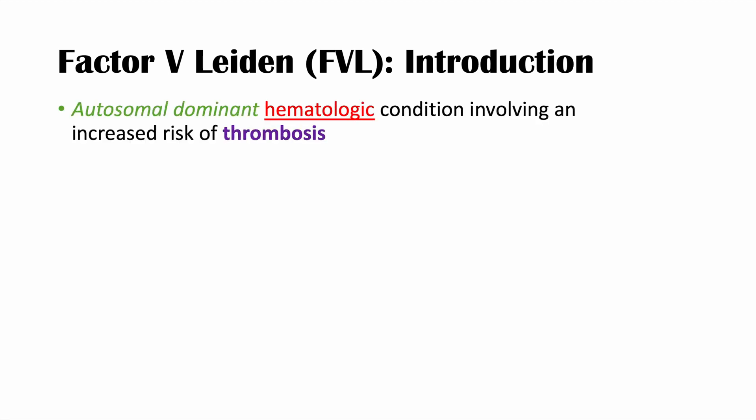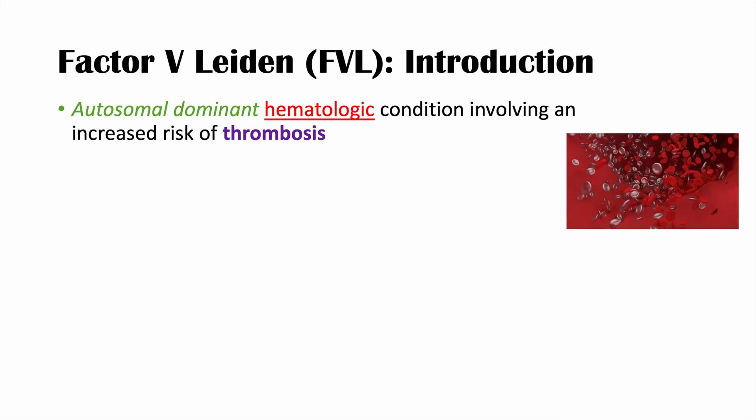Factor V Leiden is an autosomal dominant hematologic condition involving an increased risk of thromboses. Autosomal dominant means that you only need one copy of an allele — a version of a gene — to actually experience symptoms. It's a blood condition involving increased risk of clotting. It is caused by a point mutation on Factor V, which is part of the coagulation cascade. We call these the FVL mutations.